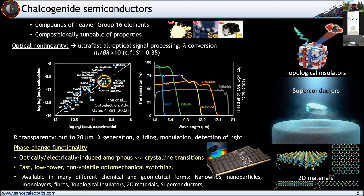Chalcogenides have very high optical nonlinearity. The nonlinear refractive index of chalcogenide glasses is much higher than traditional silica and oxide glasses, making them very suitable for nonlinear optics applications. Aside from that, they have a very wide transmission window — chalcogenide glasses have very wide transmission windows, way beyond anything available in the oxide realm. This IR transparency and optical nonlinearity was the reason why, since the 1960s and 70s, a large number of people started to look into these material systems.